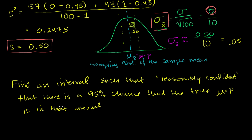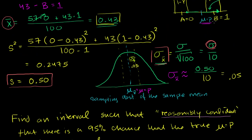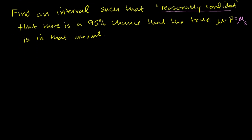Where we left off in the last video, I gave you a question: find an interval so that we're reasonably confident — we'll talk more about why I used that vague wording — that there's a 95% chance that the true population mean, which is p, the same as the mean of the sampling distribution of the sample mean, is in that interval.